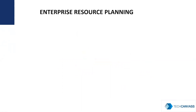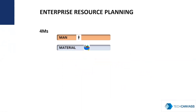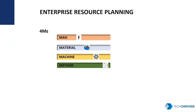ERP manages four resources: man, material, machines, and method. It helps in addressing organizational needs like reduced cycle time, customer focus, seamless shared information, and all these with keeping security in mind.